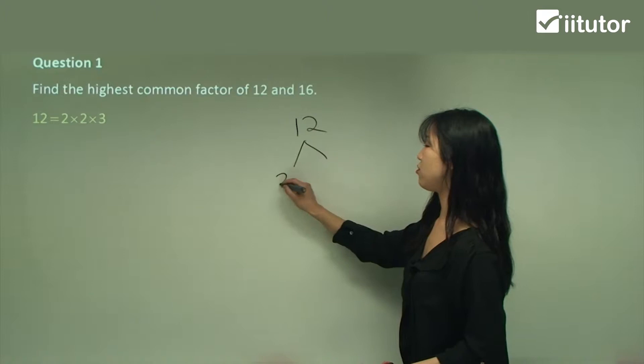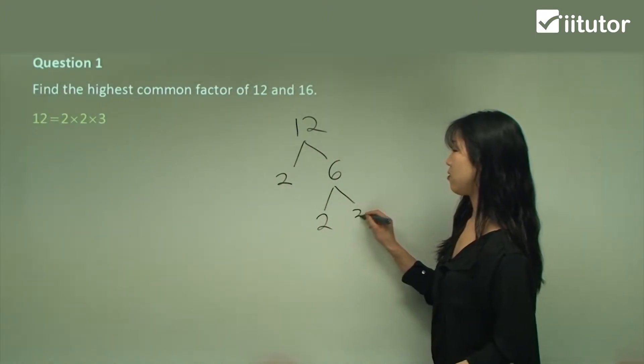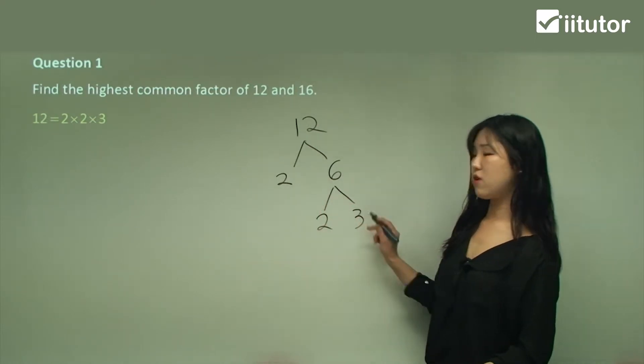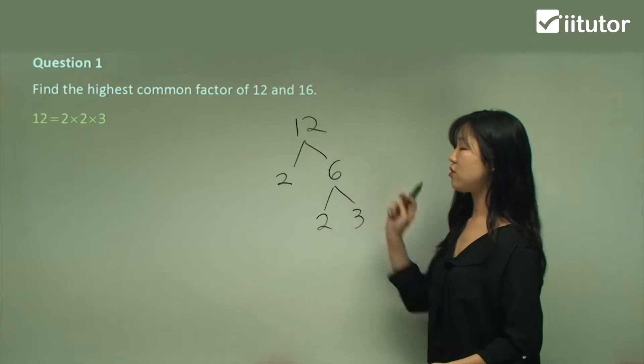12 goes into 2. 12 divided by 2 is 6. 6 divided by 2 is 3. So it's 2 times 2 times 3. We always look at the outermost left-hand side numbers.